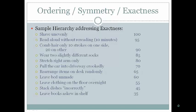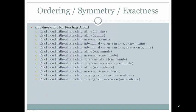A hierarchy for addressing exactness or symmetry might include: leave books askew, stack dishes incorrectly, leave clothing on the floor, leave the bed unmade, rearrange desk items randomly, park the car crookedly, stretch only the right arm, wear two slightly different socks, comb hair with uneven strokes on each side, read aloud without rereading, and shave unevenly. Even reading these items makes me anxious, though I wouldn't consider myself to have a symmetry issue. Sometimes one item must be broken into a sub-hierarchy.